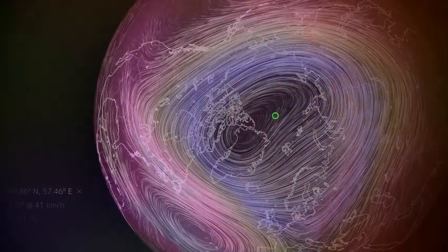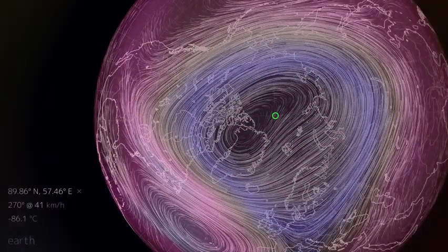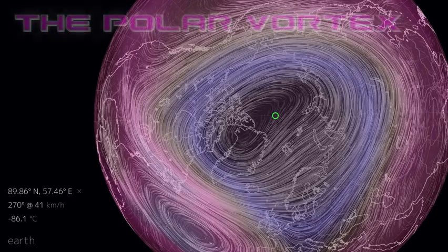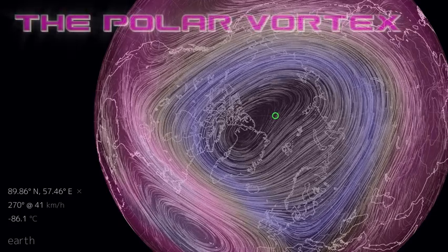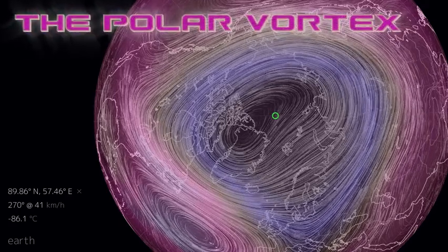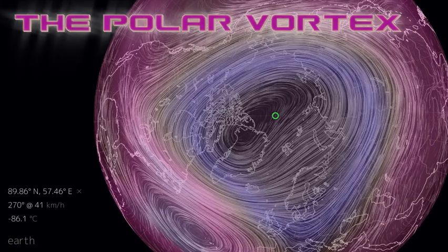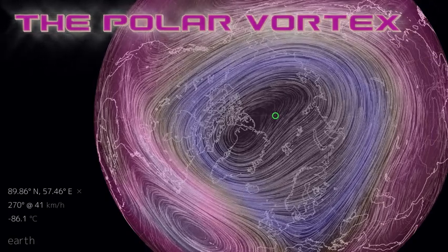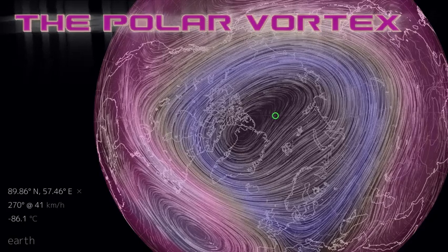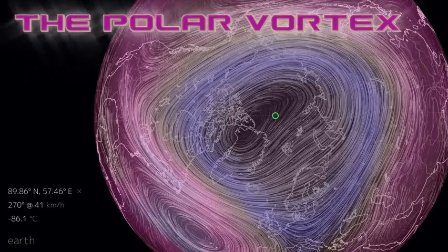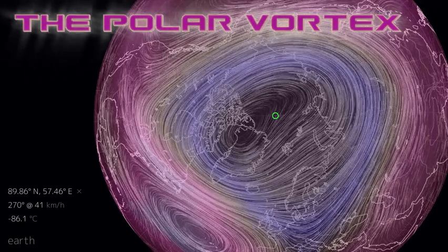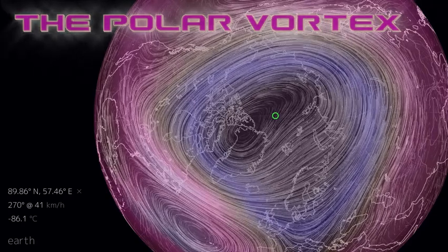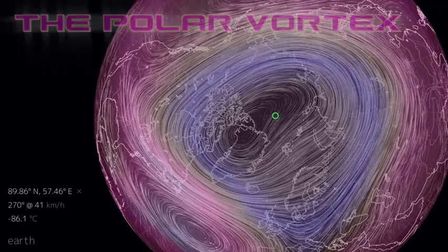Every winter, it seems like there's a lot of news stories coming out about the polar vortex and how the polar vortex is messing with the weather in the continental United States and North America in general. What these news stories typically do is they pick some weather event, either a winter storm or really cold temperatures somewhere, and they'll blame it on the polar vortex.